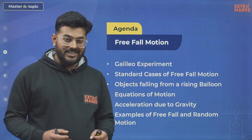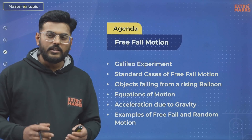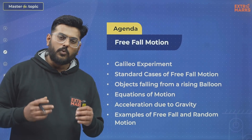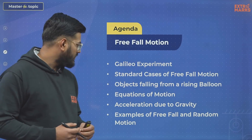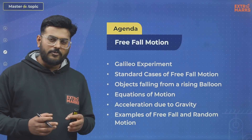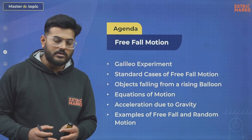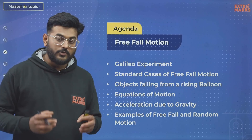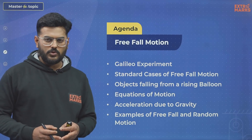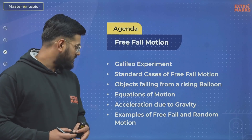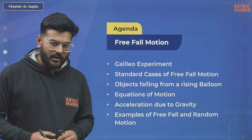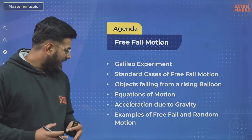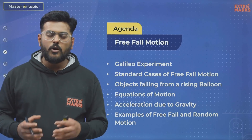What we are going to discuss in this topic: we'll be talking about Galileo's experiment, which was very evident in explaining what Free Fall Motion actually is. Then we'll talk about the standard cases of Free Fall Motion and the questions related to them — including objects falling from a rising balloon. We'll also cover equations of motion, acceleration due to gravity, and some examples of Free Fall Motion.